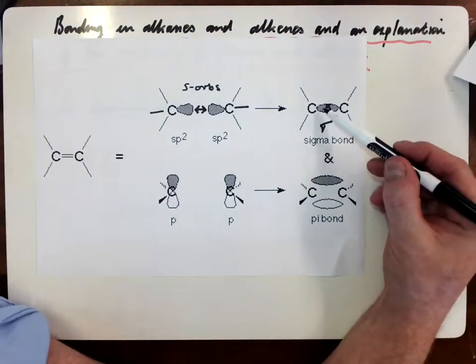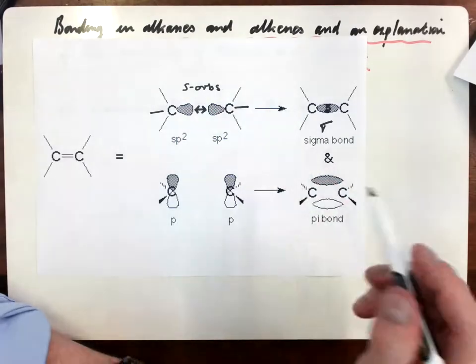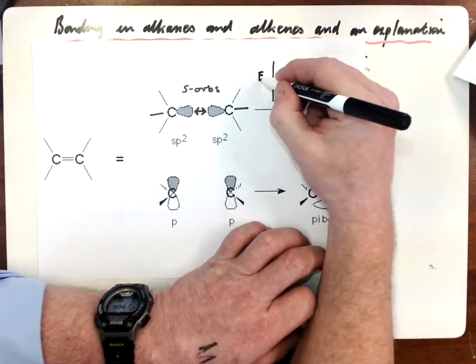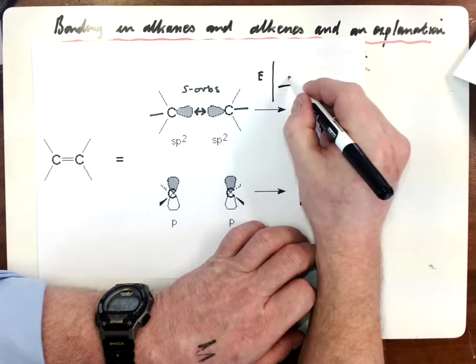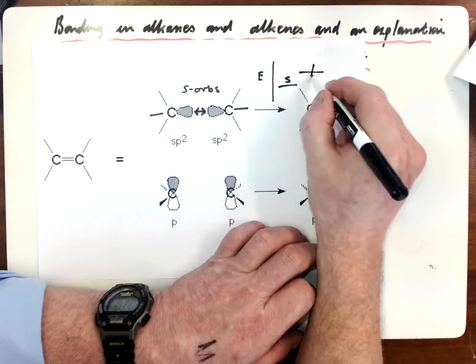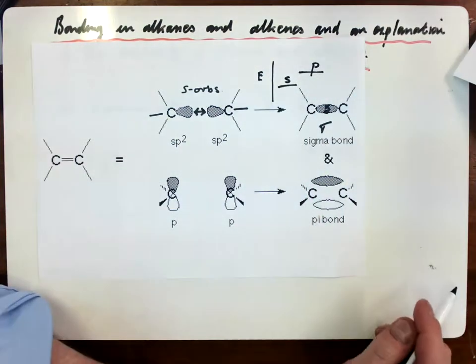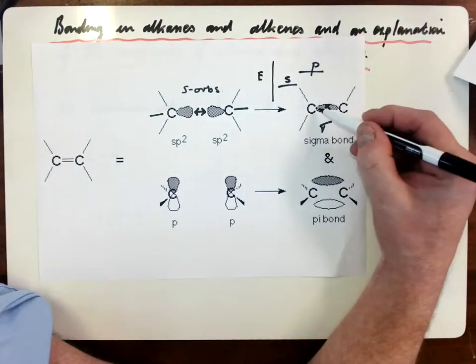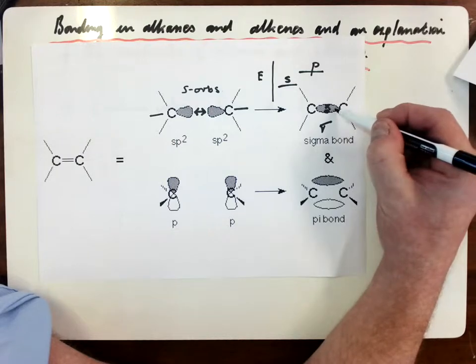Now, those electrons are S orbitals, as we said. And if you remember, if you were looking at the energy, you would remember that S orbitals are at a lower energy level to P orbitals. So they sit closer to the nucleus. So what we get in this sigma bond are two electrons which are pretty close to the nucleus, so they're held very, very strongly.